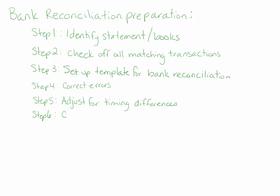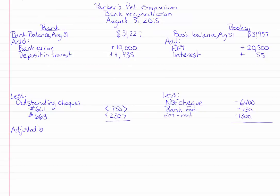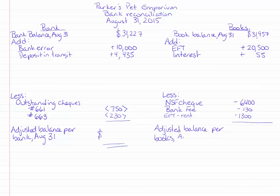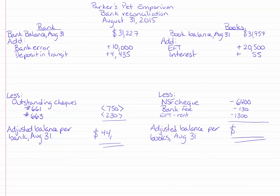Step six is to calculate the adjusted bank balance — this is the moment of truth. Does your adjusted balance per bank equal the adjusted balance per books? For the bank, I got $44,682, and for the books I got the same thing. So that is a completed bank reconciliation.